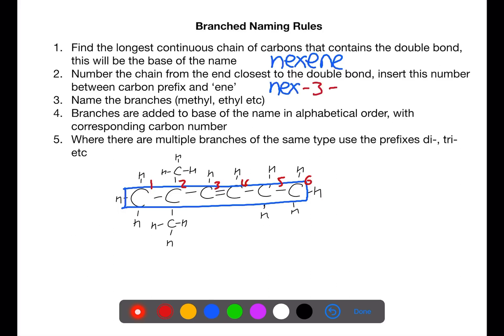You then need to identify the branches. These are added to the name at the start in alphabetical order. If there are multiple of the same branches as there are here then the prefixes di or tri are used.